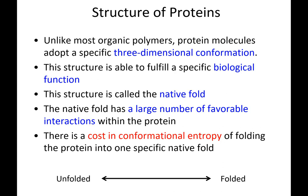Let's begin to think about the three-dimensional conformation that a protein prefers. The structure that allows the protein to be functional is called its native fold. In the native fold, there are a lot of forces causing the protein to fold into that native fold. But there is somewhat of a driving force that makes the protein want to be completely unfolded, as shown at the bottom of the screen.